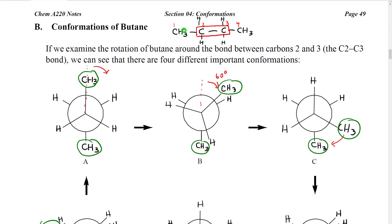When we get to a longer chain like this, it becomes important to define which bond is rotating, because we could rotate around the bond between carbons 1 and 2, the bond between carbons 2 and 3, or the bond between carbons 3 and 4. It turns out that those will have different potential energy changes and different energy profiles.